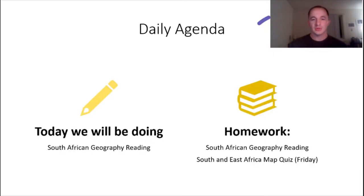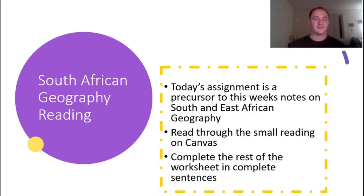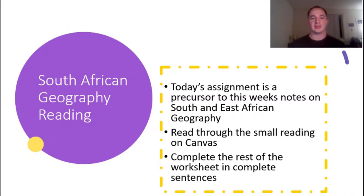Today we are doing a short reading over South African geography. This is going to be our intro into the full focus geography week. We did some last week when we made our map, which we're going to use again when we start to study for our map quiz on Friday. I wanted to focus more on some of the finer details like the climates, ecosystems, and the environment rather than just where certain things are in the area. If you go to Canvas, there is an assignment called South African Geography Reading. Today's assignment is going to be our precursor to Tuesday and Wednesday's notes on South and East African geography.